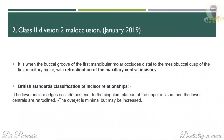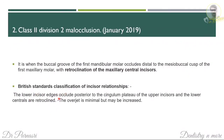The other question is Class 2 Division 2 malocclusion. According to Angle, it is when the buccal groove of the first mandibular molar occludes distal to the mesiobuccal cusp of the maxillary first molar — this describes Class 2. Division 2 means with retroclination of the maxillary central incisors, which differentiates it from Division 1. According to the British Standards classification of incisor relationship, the lower incisor edge occludes posterior to the cingulum plateau of upper incisors, the lower centrals are retroclined, and the overjet is minimal but sometimes may be increased.